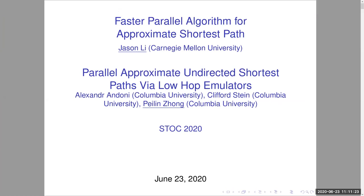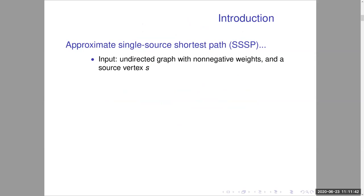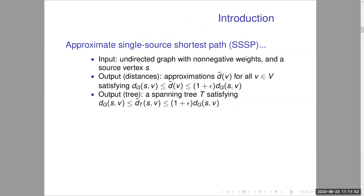This talk is on faster parallel algorithms for approximate shortest path and, concurrently, parallel approximate undirected shortest paths via low-hop emulators. The problem is the approximate single-source shortest path problem: given an undirected graph with non-negative weights and a source vertex S, output approximate distances from S to every vertex V, or alternatively an approximate shortest path tree. Historically these problems tend to be of similar difficulty — algorithms that solve one usually solve the other too.